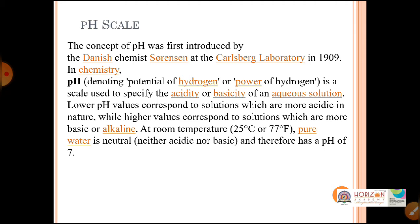pH is used for determining the acidity or basicity of an aqueous solution — a solution in which water is the solvent, for example sugar dissolved in water. Acidic pH values are below 7, meaning whatever pH value is below 7 indicates an acidic solution, and above 7 — from 7 to 14 — are basic or alkaline values.